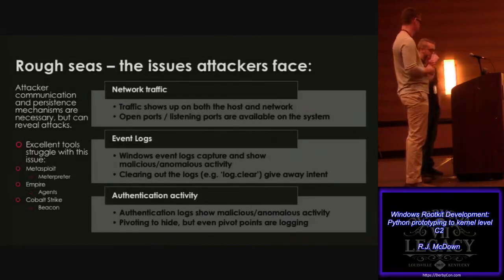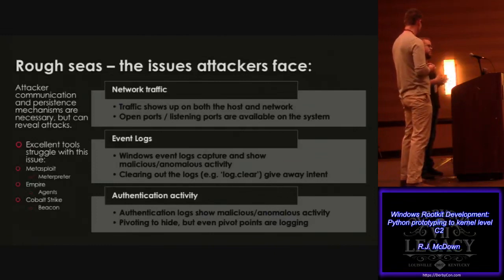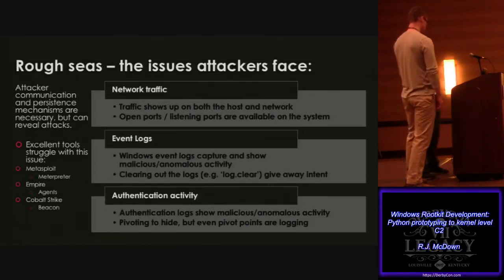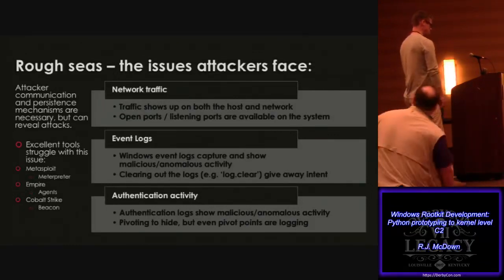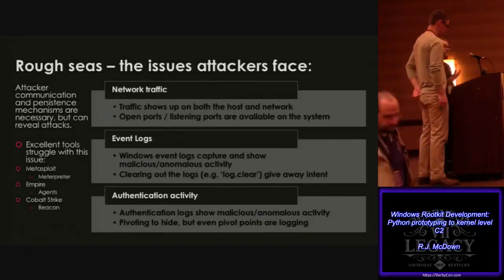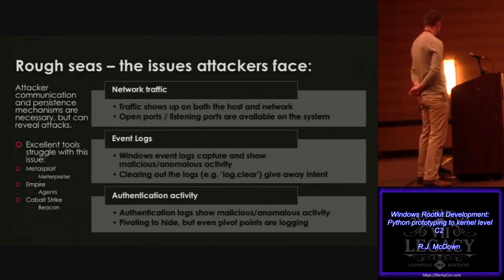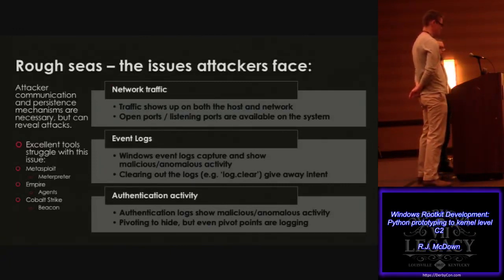Network traffic is a big one - IDS is looking at network data. One thing that gets people caught is if you pull down a stager and it pulls down the second payload and it's not encrypted, that can be an issue. Event logs for logins are also a big thing now - anomalous activity on the network. We see a bunch of logins from this one IP but that's not typical for the environment - what's going on?